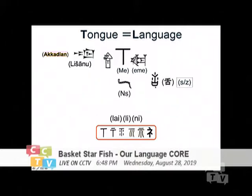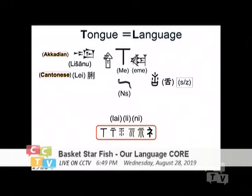In Chinese, we also have a frog tongue. We follow the sound of S or Z, which is part of this. But in Cantonese, we never use this word in colloquial speech. When we speak in Cantonese, we always use the sound 'lay' — exactly as 'Lisanu' right there — 'lay.'